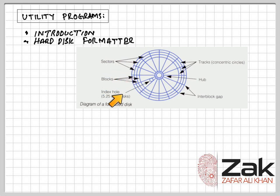This index hole makes sure the disk starts reading from the area close to it. And this hub is actually the area which is fixed over the axle which moves the disk in circles.